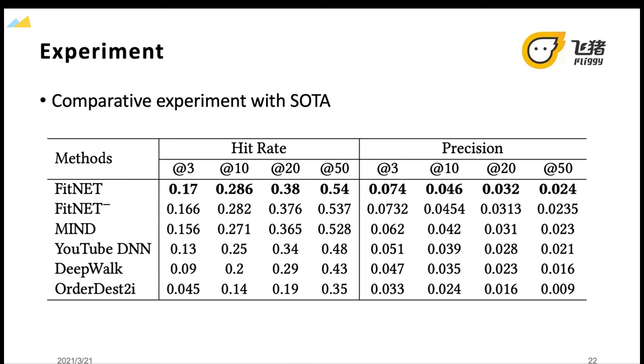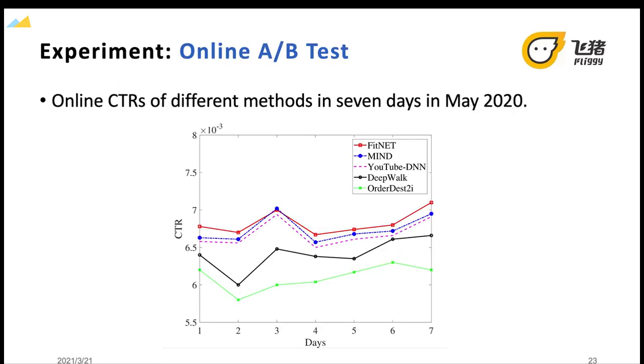Results on the offline dataset of different state-of-the-art are shown on these slides. It is worth noting that FitNet makes, on average, 5.2% increase in hit rate and on average, 9.1% improvement in precision, compared with the next best method, MIND.